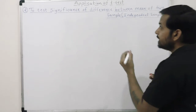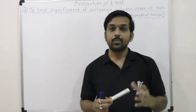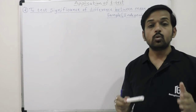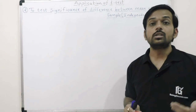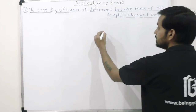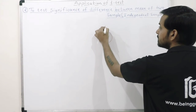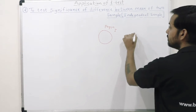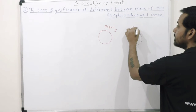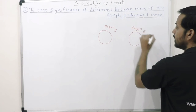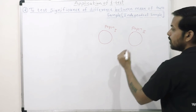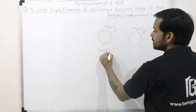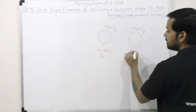When we are dealing with two samples and the sample size is small, we need two samples with small size. Suppose we have two different populations — population one and population two. We have a sample in population one, named sample one, with mean x-bar one.